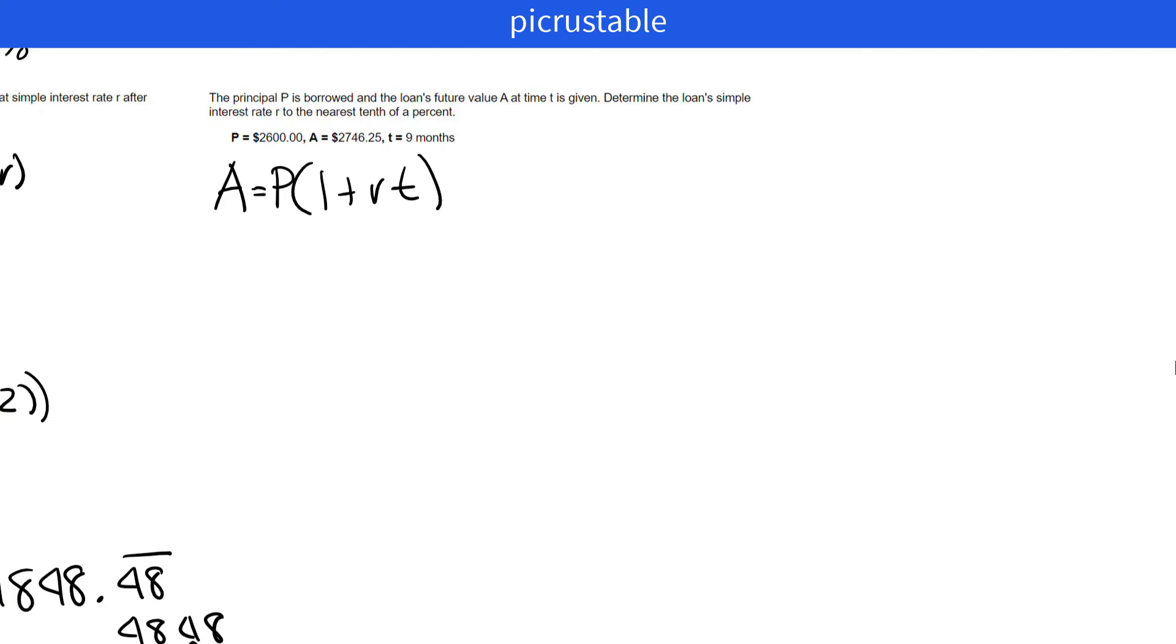A equals P times 1 plus RT. Let's fill in what we know. We know A is $2,746.25. We know the principal is $2,600. One plus, we don't know the rate, but we know the time. And the time is 9 months. So that's based on a year. So we're going to do 9 divided by 12.